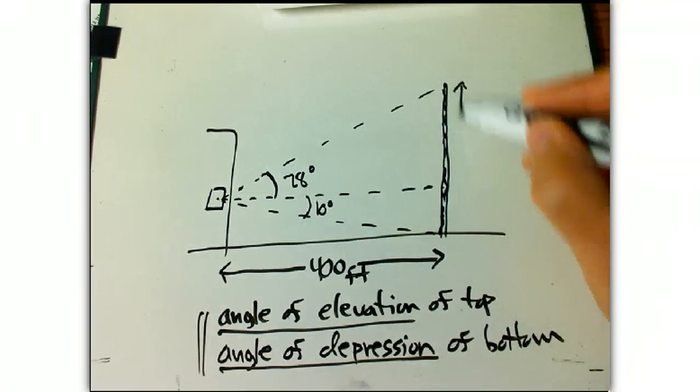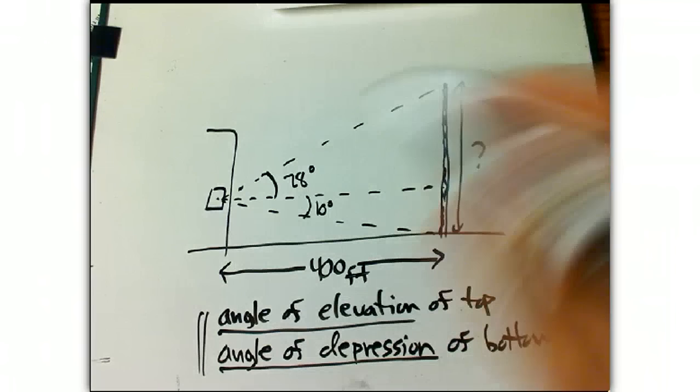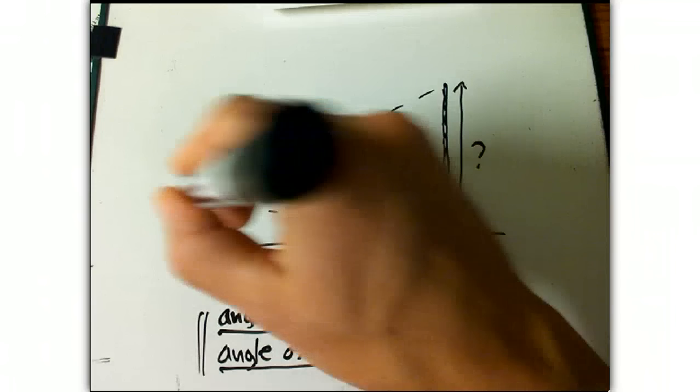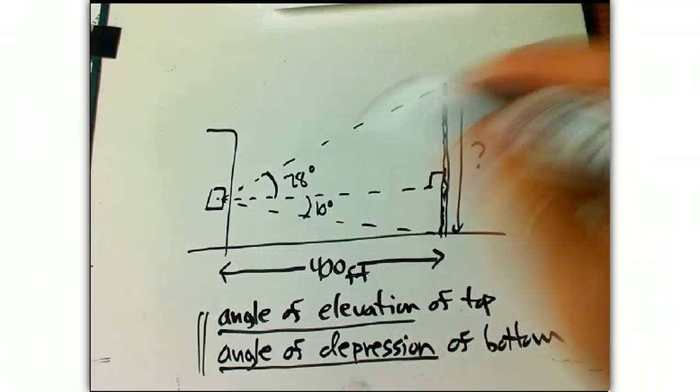I want to know the height of the tower. How high is the tower? Well, this isn't just one right triangle, but it's not too hard because it breaks up into two right triangles. This horizontal that we use to refer the angle of elevation and depression to breaks it up into two right triangles.